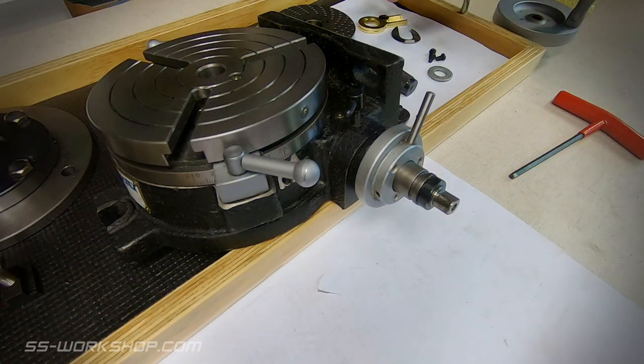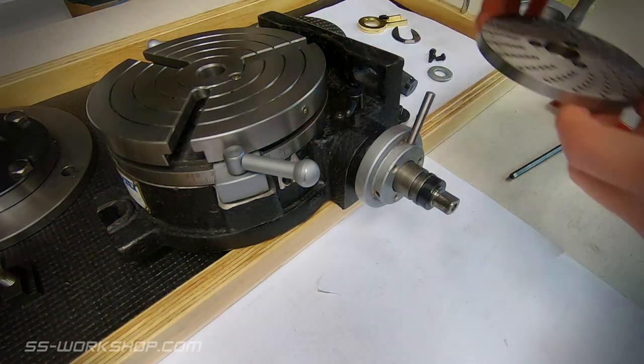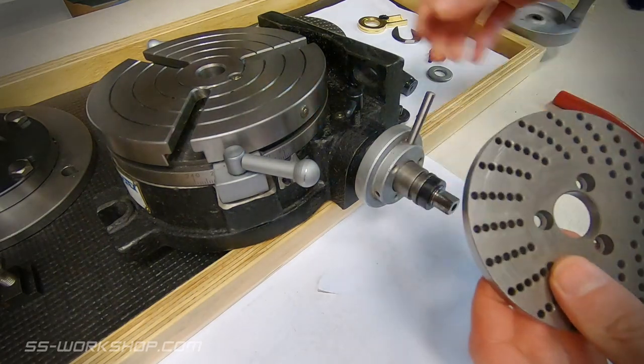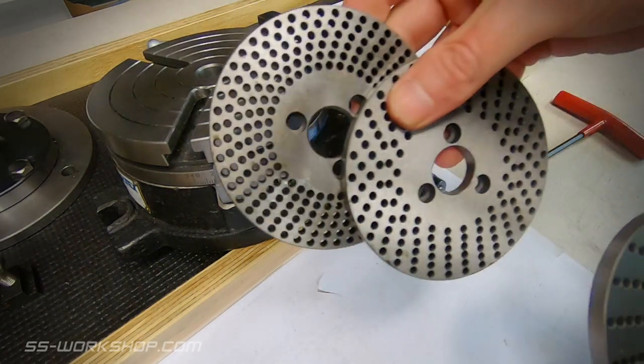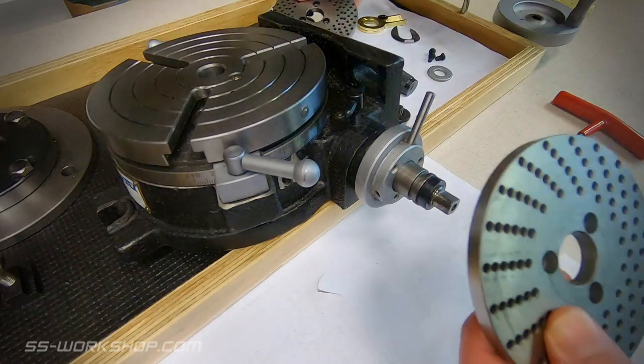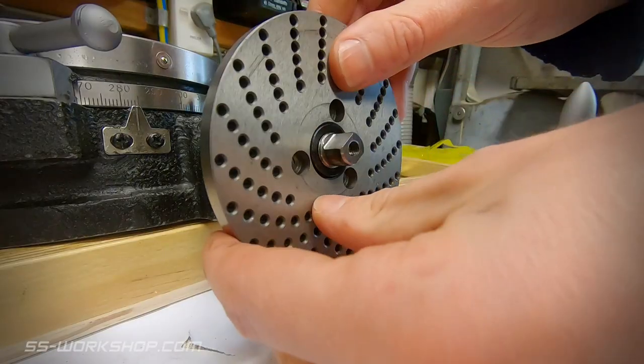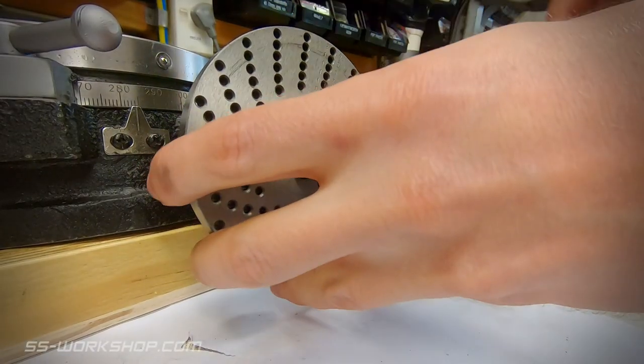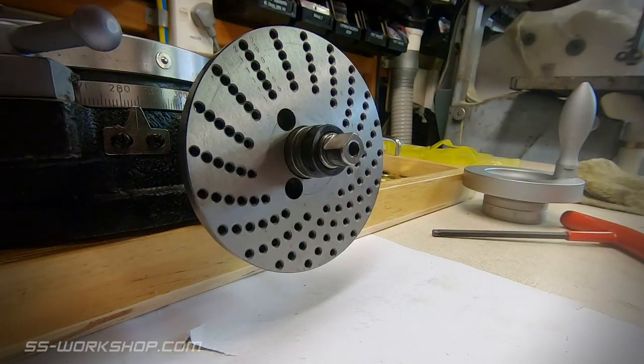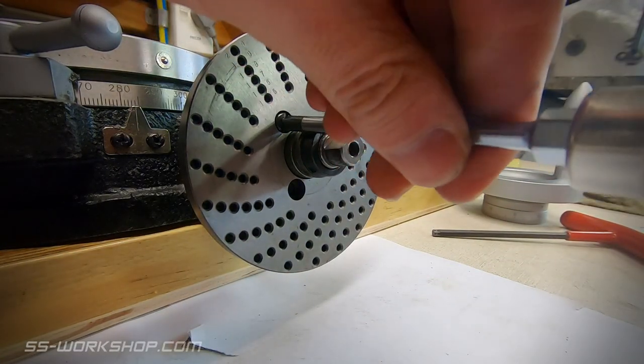The first part to install is the dividing plate. This kit comes with three sizes. Vertex are called plate A, B and C and today I'm installing plate A as per the table for my 19 divisions. This is then fixed in place with three Phillips head screws.